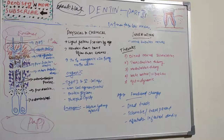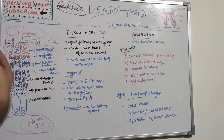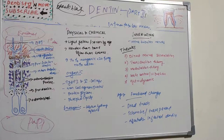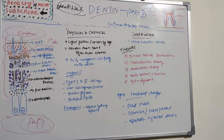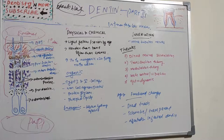Gate control or vibration theory states that pain is a function of the balance between information traveling through large nerve fibers and small nerve fibers. Large fibers carry non-nociceptive information and small fibers carry nociceptive information. A-beta fibers transmit information from vibration receptors and stimulate inhibitory neurons in the spinal cord, which reduce the pain signals transmitted from A-delta and C fibers across the midline of the spinal cord and from the brain.